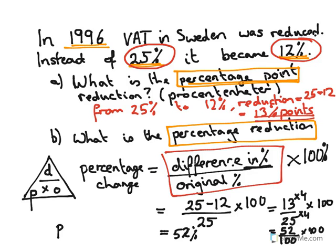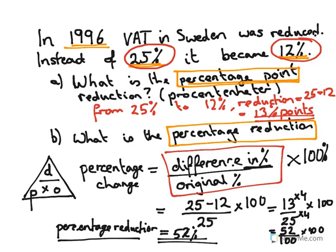So the percentage reduction is 52%. We approximately halved the rate of VAT, which is exactly what we can see — we had a VAT rate of 25%, we've just over halved it to 12%, so we'd expect the percentage reduction to be around 52%. So percentage points is just the change in the percentage value (25 minus 12 = 13), while percentage change uses that difference divided by the original. That's the distinction between percentage change and percentage points.